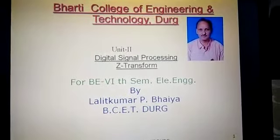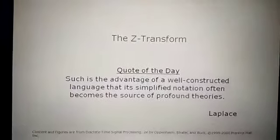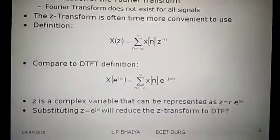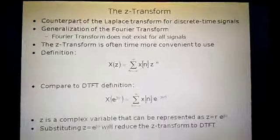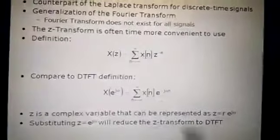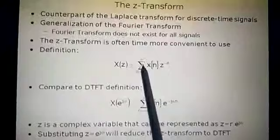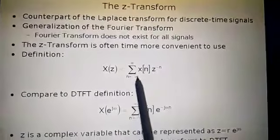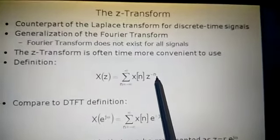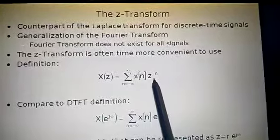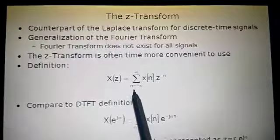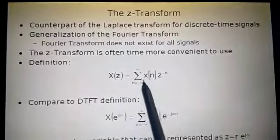Let us go ahead for this Z transform. This is the quote of the day which I put here. This is from Laplace because after the Laplace there is a relation with Z transform also. The equation or definition of the Z transform is given as X(Z) = Σ (n = −∞ to ∞) x(n) · Z^(−n). This is the general definition of the Z transform and it is more convenient to use.